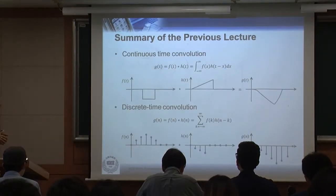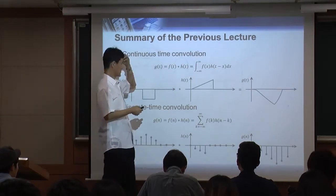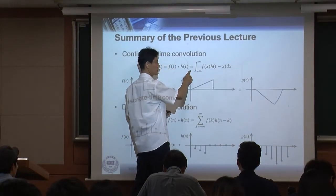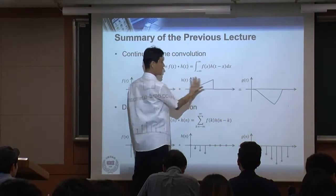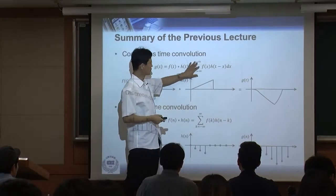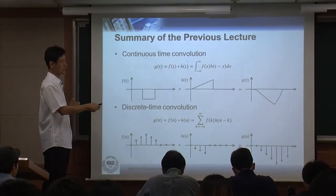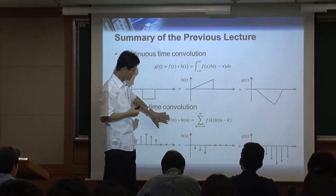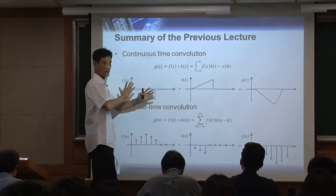We also discussed convolution. There are two different types: continuous time and discrete time — basically the same. The definition of convolution: f(t) convolved with h(t). To calculate it, you choose one of the two signals, flip it, and slide it, then integrate while sliding. For discrete time, the only difference is that you slide sample by sample in discrete fashion.